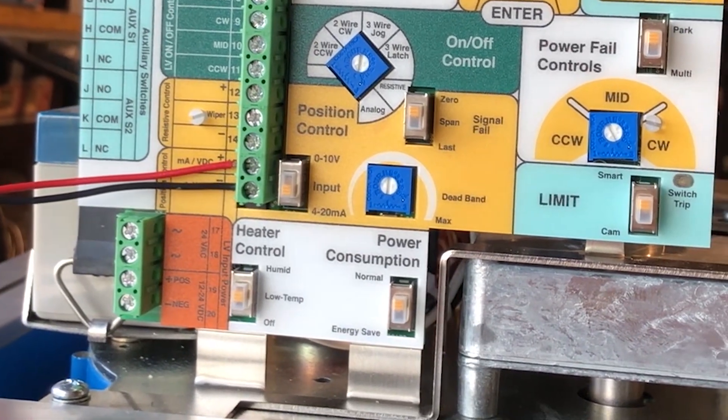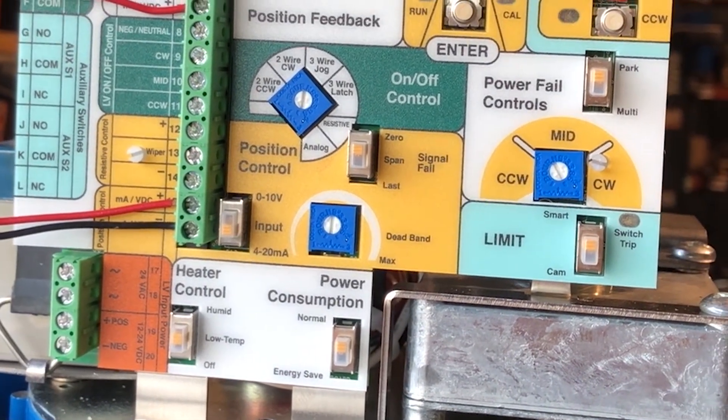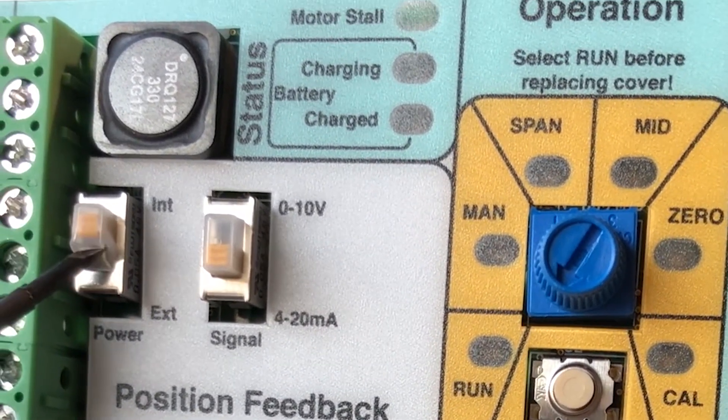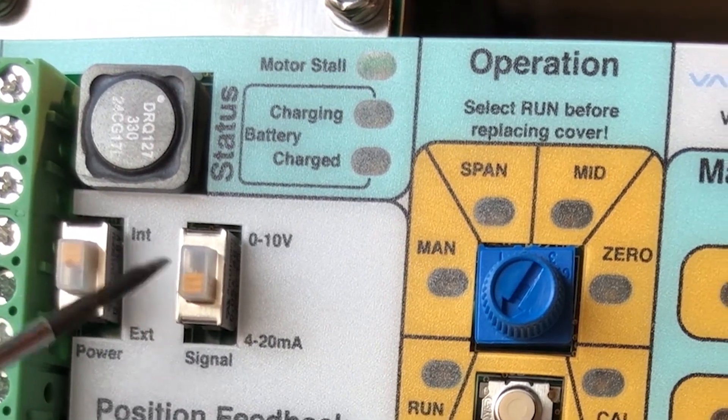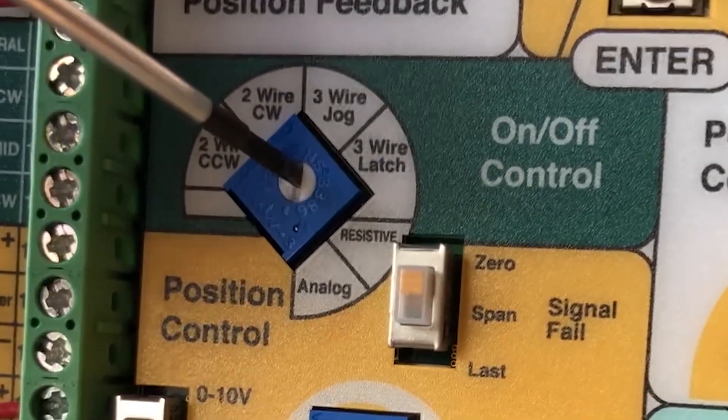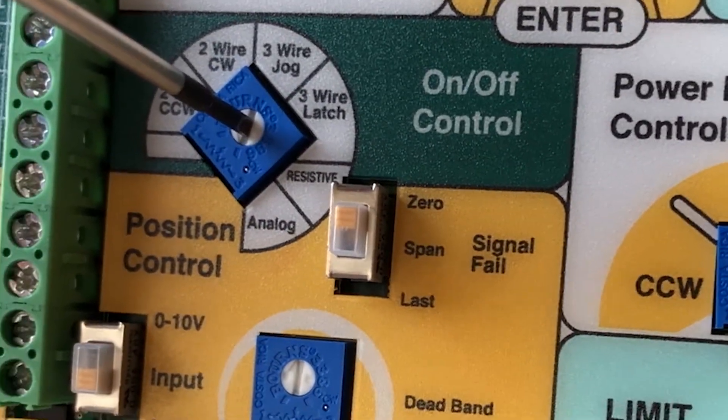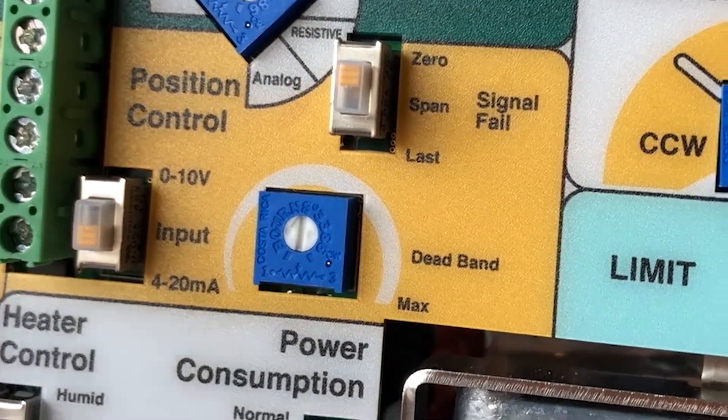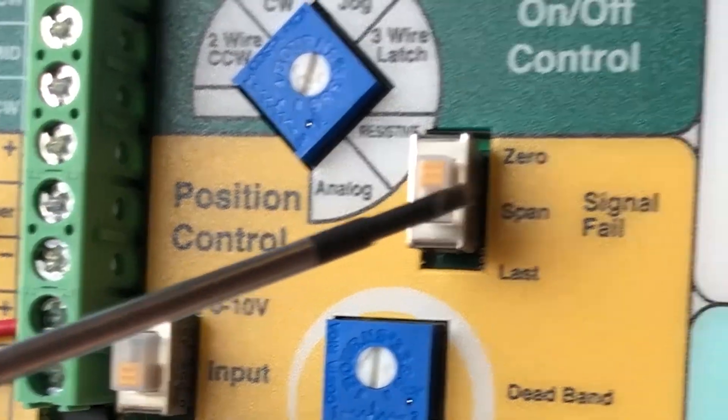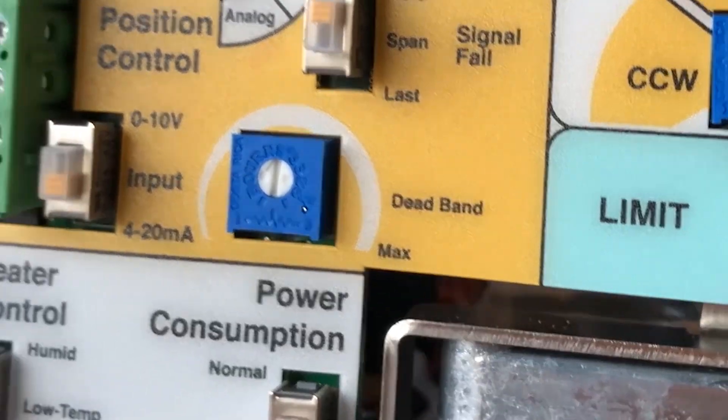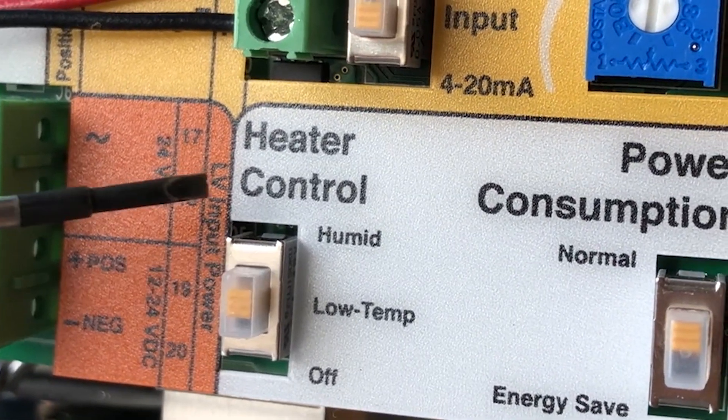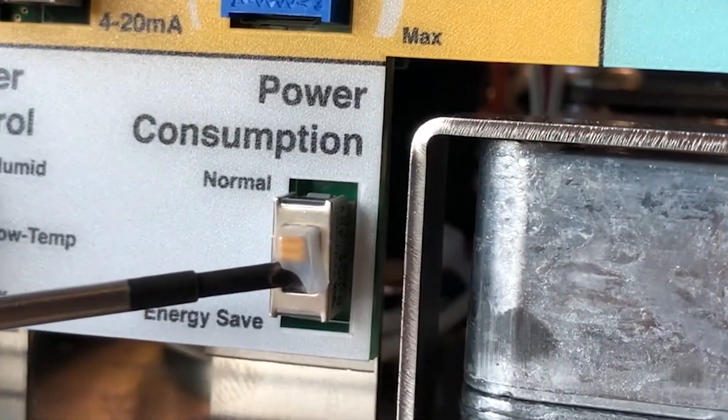Before we power on our actuator we're going to check the dip switches on our board. So first we're going to start up here in the position feedback. I want to verify power dip switches in the internal position. Our signal is in the 4 to 20 milliamps. Our on and off control dial is verified that the arrow is pointing down to the analog. Our position control is 4 to 20 milliamps. Signal fail is zero. Heater control for your location is going to be in the low temperature position. Power consumption is in the normal position.